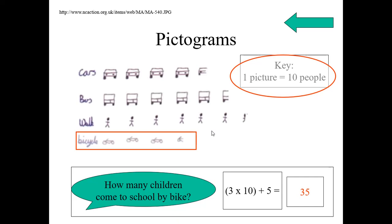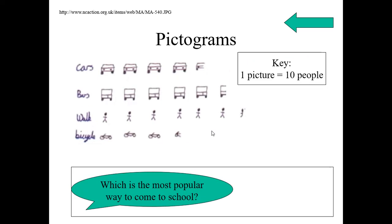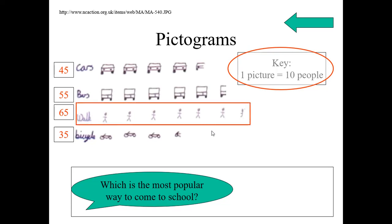This is reading the pictograms. Another question. Which is the most popular way to come to school? Now, we have to write all the numbers here. Beside the car, 45. Beside the bus, 55. Is it right? Check with your friends. Discuss with your teacher. How many come to school by walk? 65. How many come to school by bicycle? 35. Now, which is the most popular way? Among all, which is the largest one? 65. The most popular way to come to school is by walking.